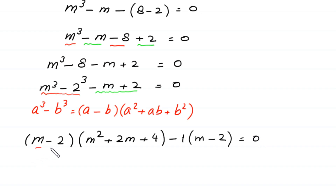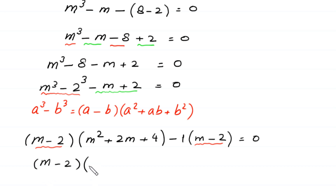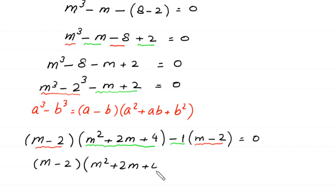As you can see, m minus 2 is a common factor in both terms. We factor out m minus 2, and inside the bracket we are left with m squared plus 2m plus 4 minus 1, which simplifies to m squared plus 2m plus 3, equal to 0.